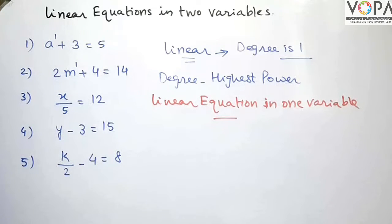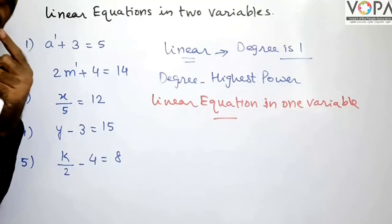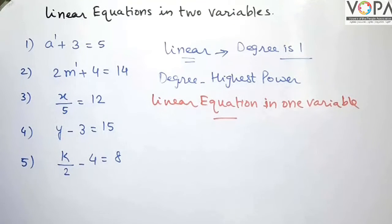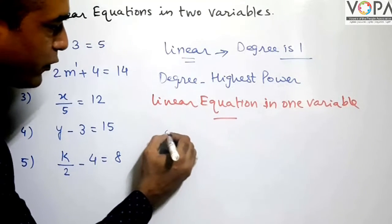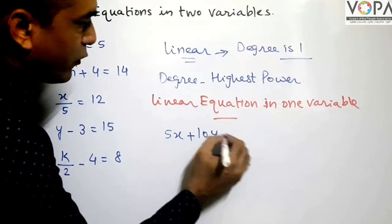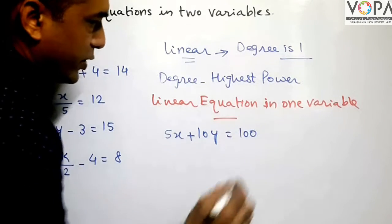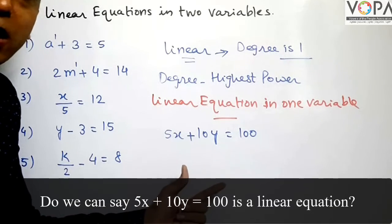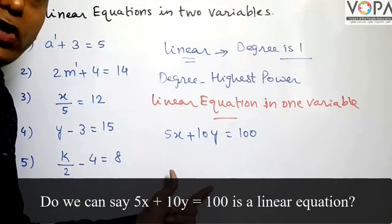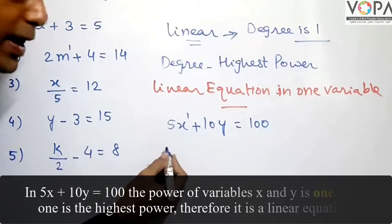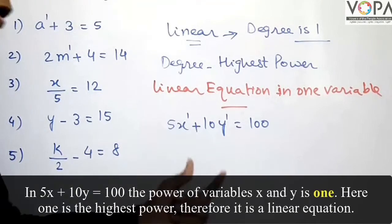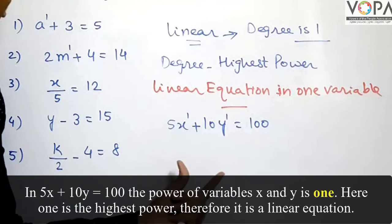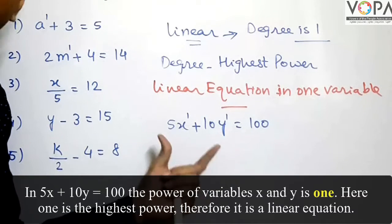Let's move on. You remember that in the last video, we had an example that we have some 5 rupees notes and some 10 rupees notes, and the total amount is 100. The equation was 5x plus 10y equals to 100. Now, can we call this equation a linear equation? The degree of x is 1 and the degree of y is also 1. Because the degree of each variable is 1 in this equation, this equation is a linear equation.